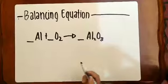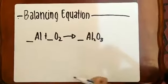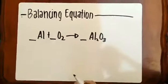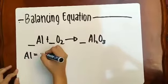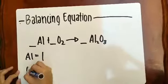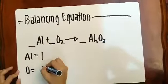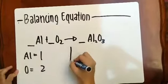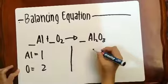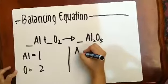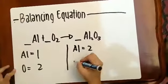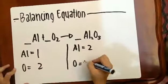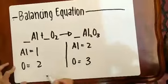For an example of a balanced equation that needs to be balanced, first we have to write down all the chemical reactions. Aluminum is equal to 1, oxygen is equal to 2. Aluminum in the product is equal to 2, oxygen is equal to 3.